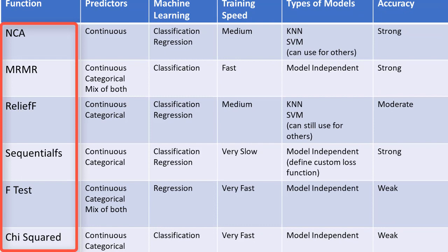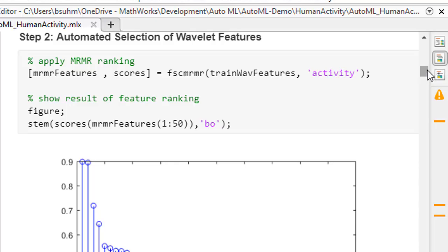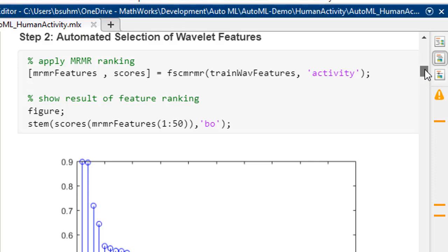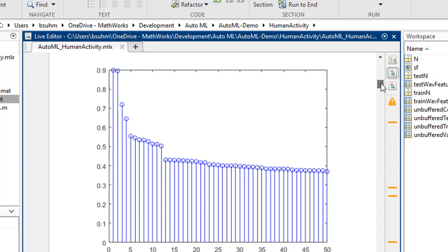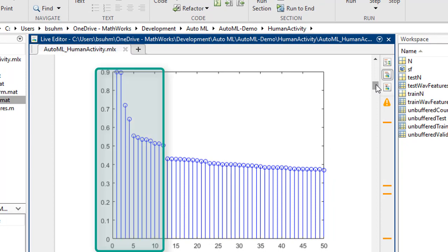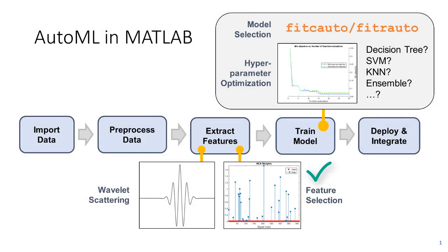The table here helps you choose the appropriate method based on the characteristics of your data. Here we apply the minimum redundancy maximum relevance algorithm, which works really well on continuous and categorical features for classification. The feature ranking chart suggests that as few as a dozen features capture the majority of the variability in the signal. After selecting a small performance set of features,